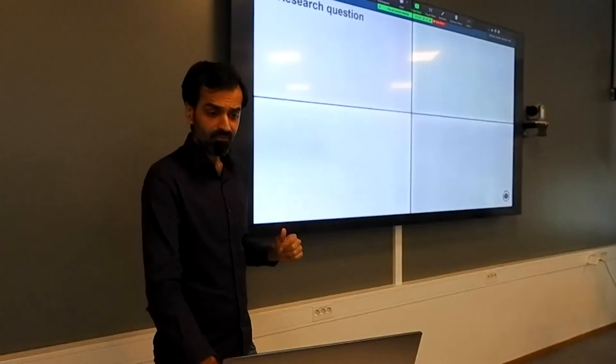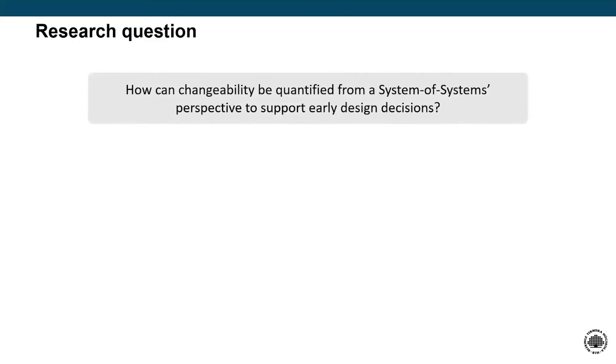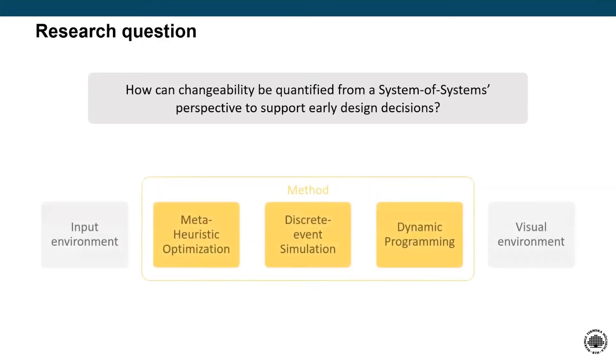So there is always a balance, and we wish to find that balance which is the cost-effective change for our system. And that's where my research comes in, especially today when we are always looking at complex systems from a system-of-systems perspective. How can we quantify change from a system-of-systems perspective to support early design decisions?